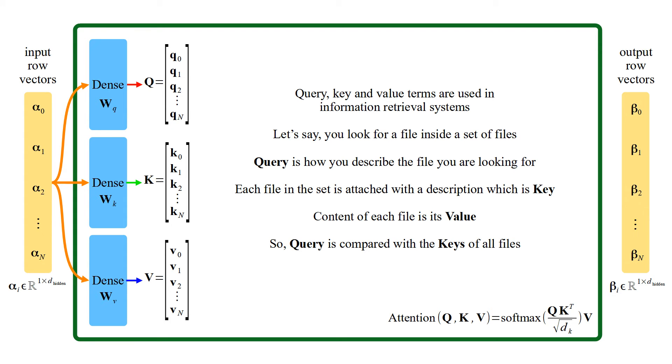So, query is compared with the keys of all files. Result is a relevance or similarity score for each file in the set.